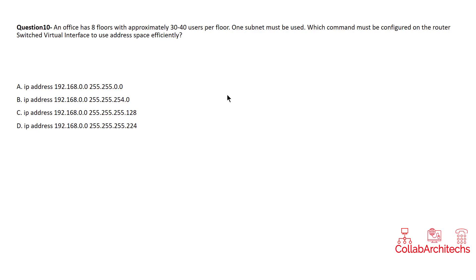Now, let's see what this CCNA routing and switching question is asking about. An office has eight floors with approximately 30 to 40 users per floor. One subnet must be used. Which command must be configured on the router switched virtual interface to use address space efficiently?